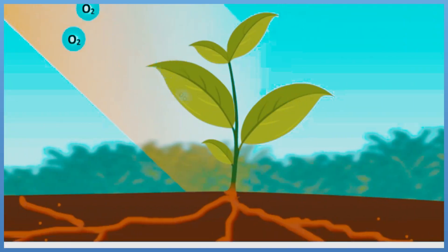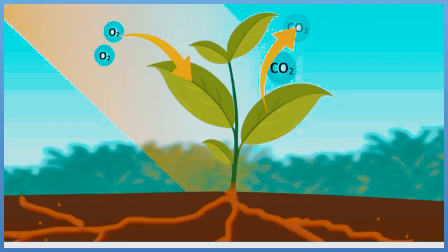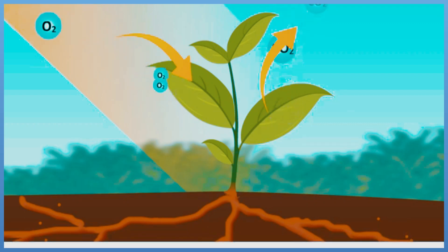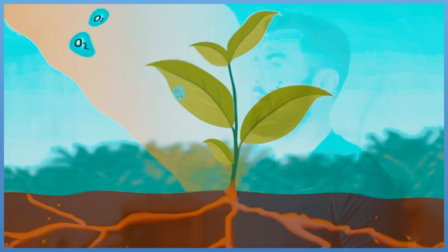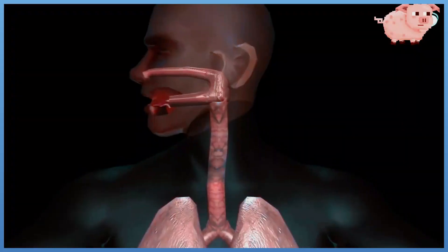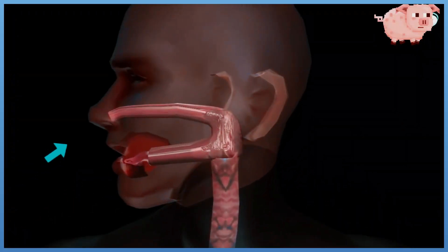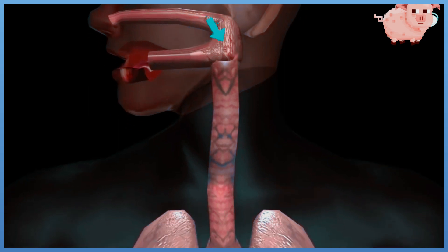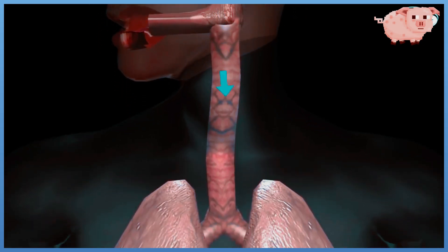Gases enter plants through the leaves. Air enters the human body through the nose and mouth, then travels to the lungs, where oxygen is absorbed into circulating blood.